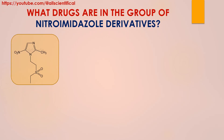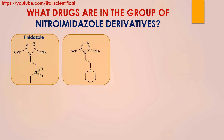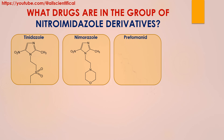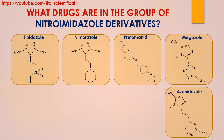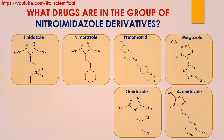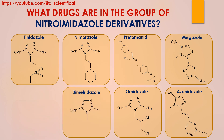Metronidazole is one of the derivatives of nitroimidazole. Other drugs included in the group of nitroimidazole derivatives are: tinidazole, nemorazole, pretomanid, megazole, azanidazole, ornidazole, dimetridazole, and metronidazole.